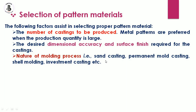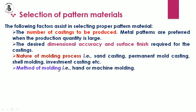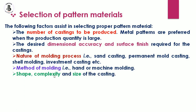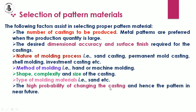The nature of the molding process — such as sand molding, permanent mold casting, shell molding, or investment casting — determines which pattern material is selected. Methods of molding, whether manual hand molding or machine molding, also matter. Shape complexity and size of the castings, type of molding materials such as sand, and the probability of changing the castings and pattern in the near future are all factors in pattern material selection.